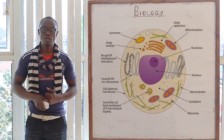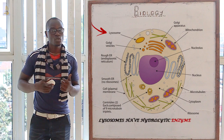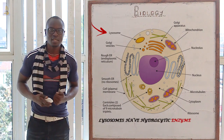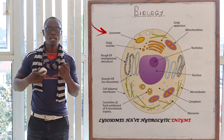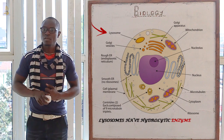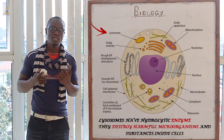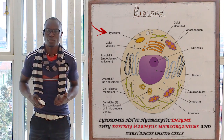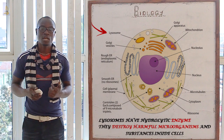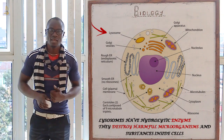The other organelle we have is the lysosome, whereby these are organelles which mainly contain hydrolytic enzymes. The function of the lysosome is that they destroy harmful microorganisms and substances which are found inside the cell.